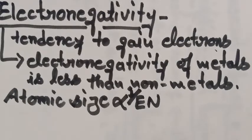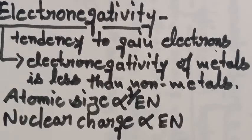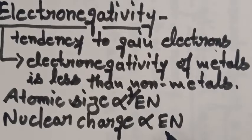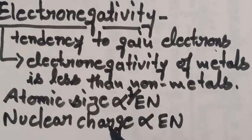You can also understand this in terms of nuclear charge. Electronegativity is directly proportional to nuclear charge. With the increase in nuclear charge, the nuclear attraction on the electrons increases, and hence the tendency to gain electrons also increases.